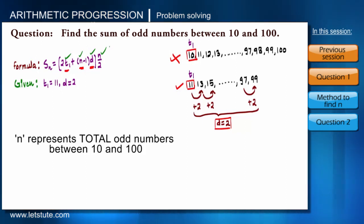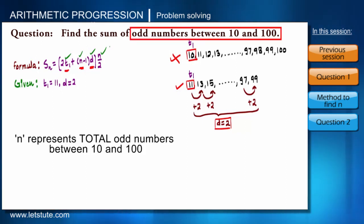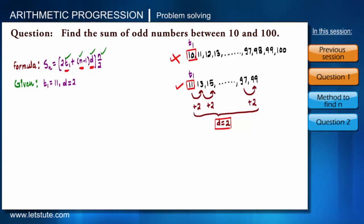Now let's go to the third parameter n. Here n represents total odd numbers between 10 and 100. Finding this is bit interesting. See guys, there are always half even numbers and half odd numbers. So from 0 to 100 there will be 50 odd numbers.